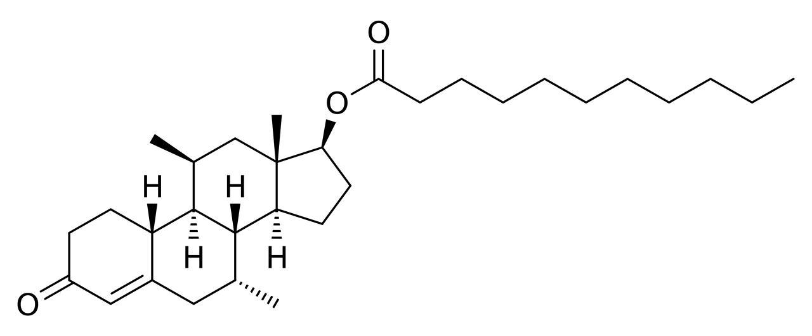DMAU is an androgen ester, specifically an ester of dimethandrolone, and acts as a prodrug of dimethandrolone in the body. As such, it is an AAS, or an agonist of the androgen receptor, and is also a progestogen, or an agonist of the progesterone receptor.